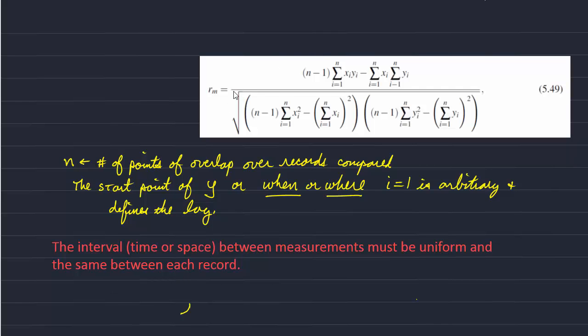And the little m here as Wessel describes that's what defines the match point. So that's what defines where i is equal to 1, the first point of the y array being correlated with the x array for example.